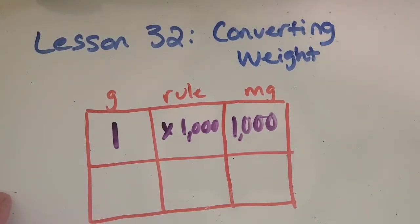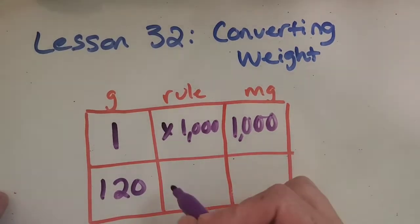Okay great, times 1,000. And then we were given the information that an average typical banana is 120 grams. So why don't you pause the video and see if you can figure out how many milligrams that is. Let's check your work.